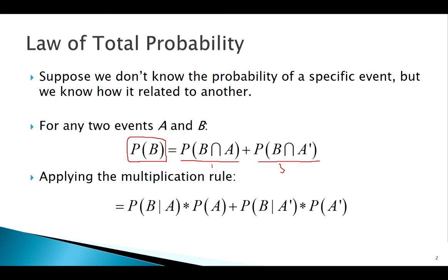So again, it's used when maybe we don't know the probability of an event — here we're interested in event B. We don't know P(B) directly, but we know how B relates to A. We can use this truth and the multiplication rule to find: given that A happened, what's the probability of B? We also know P(A) and P(A not happening) and how that relates to B. That's the idea of the Law of Total Probability.